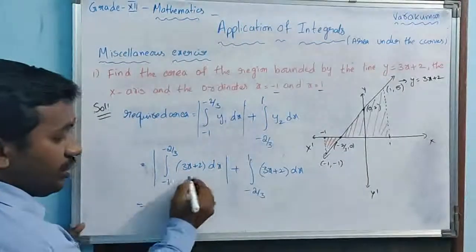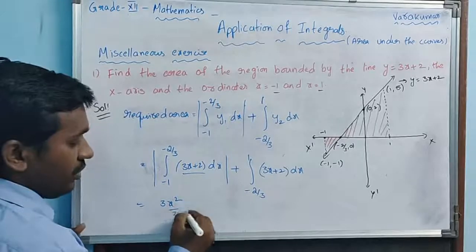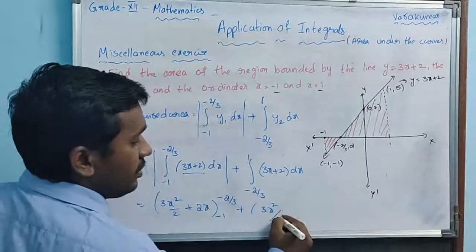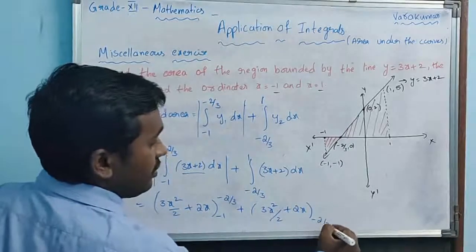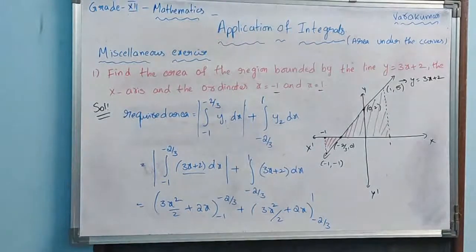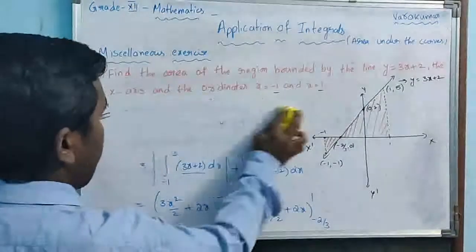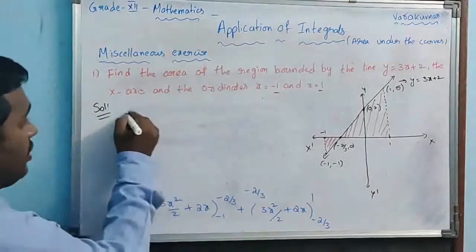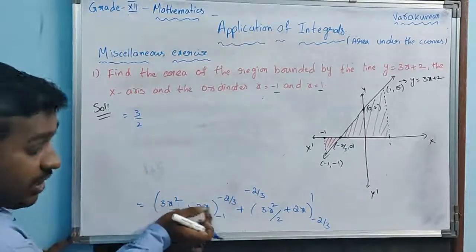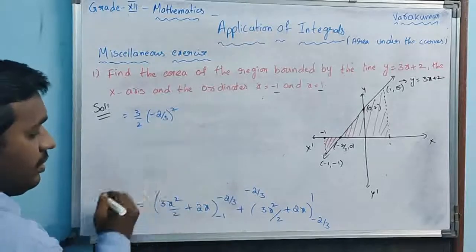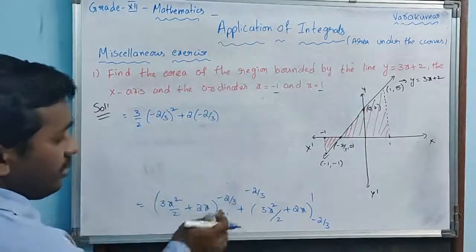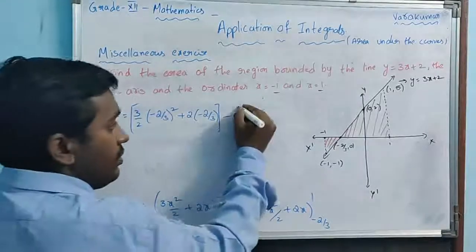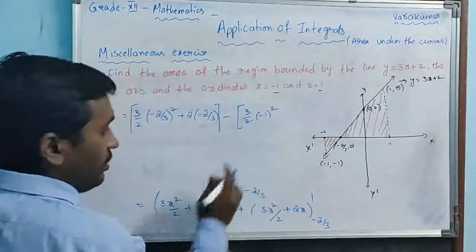Performing the integration, the antiderivative is 3x²/2 + 2x. Apply limits -1 to -2/3 for the first integral, and -2/3 to 1 for the second. Substituting the upper limit first: for the first part, substitute x = -2/3: 3/2 × (-2/3)² + 2 × (-2/3).